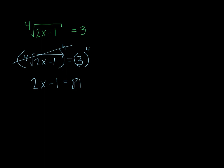Now step 3 would be to solve the remaining equation. So we're going to just add 1 to both sides. So 2x equals 82, and divide both sides by 2, and we get x equals 41.